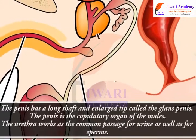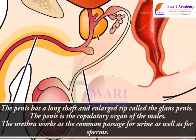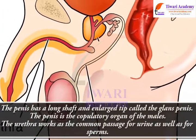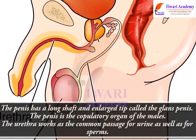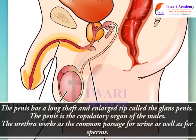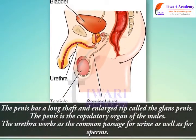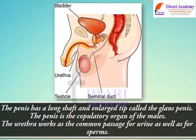The penis has a long shaft and an enlarged tip called the glans penis. The penis is the copulatory organ of the male. The urethra works as the common passage for urine as well as for sperm.